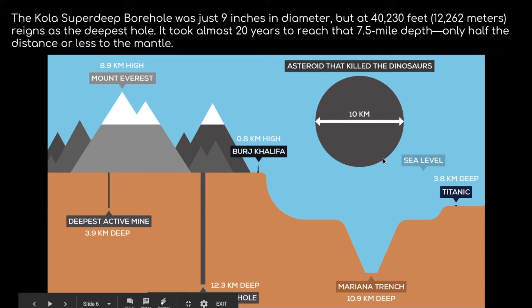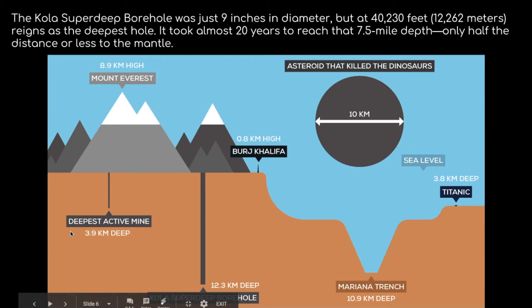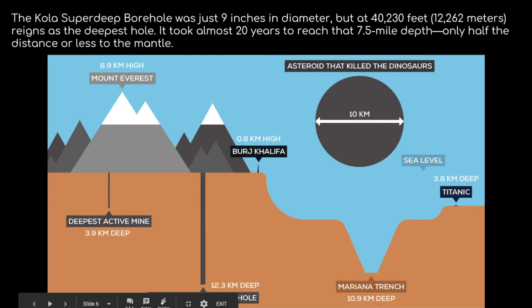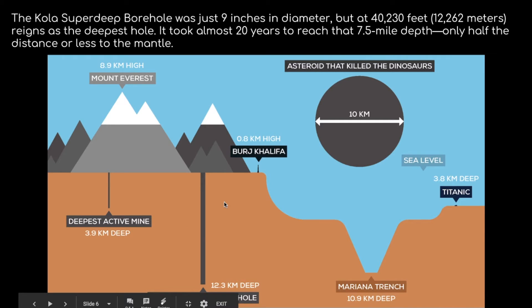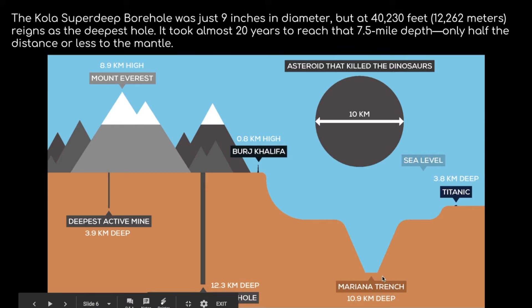To give a sense of scale: here is the asteroid that killed the dinosaurs; the world's tallest building, the Burj Khalifa in Dubai, is 0.8 kilometers high; sea level is at 0 kilometers; Mount Everest, the highest mountain, is 8.9 kilometers high; the deepest active mine is 3.9 kilometers deep; the Mariana Trench in the Pacific Ocean — the deepest point on Earth's surface — is 10.9 kilometers deep, even deeper than Mount Everest is tall. And the Kola Superdeep Borehole is 12.3 kilometers deep, even deeper than the Mariana Trench.